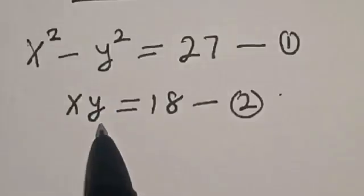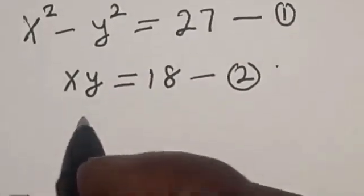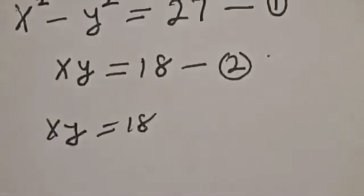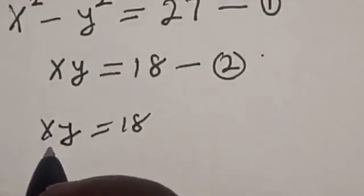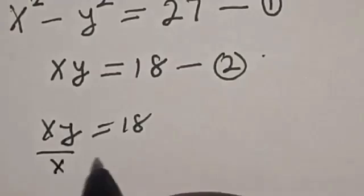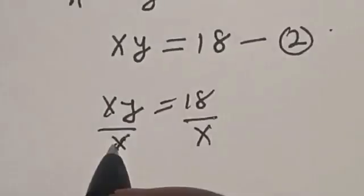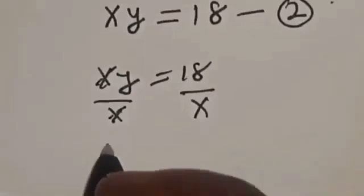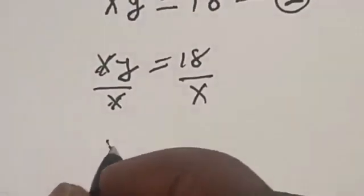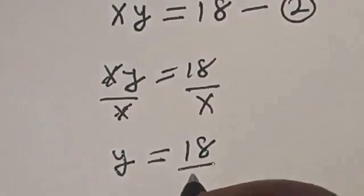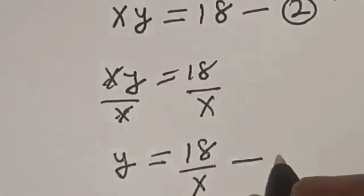From equation 2, let's make y the subject of the formula. xy is equal to 18. Now let's divide both sides by x. This x will cancel the x, so y is equal to 18 divided by x. Let's call this equation 3.